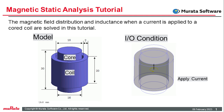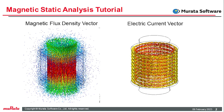In this tutorial, the distributed magnetic field and the inductance are solved when the current is applied to the coil with core. We can visually understand the direction and magnitude of the magnetic field vector, magnetic flux density vector, current density direction, and so on.